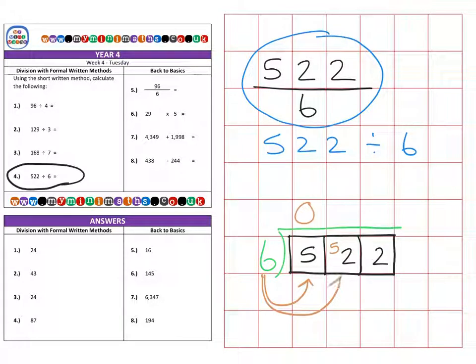How many sixes fit into 52? Well, if I use my six times tables and I count up in my multiples of six, then I will hit 48, which is eight sixes, and I've got four left over between the 48 and the 52, which I carry over to the next box.